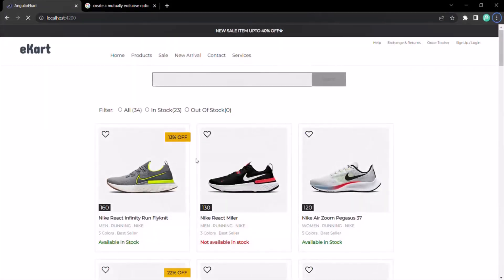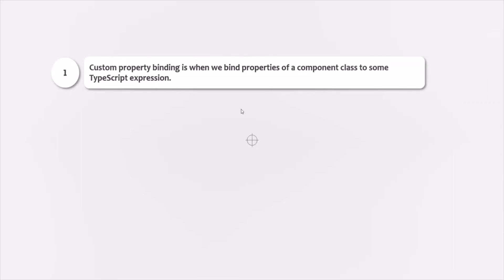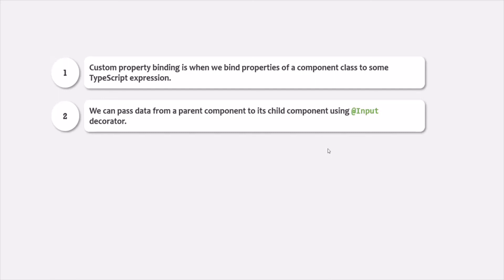Let's go back to the web page. Now you can see the out of stock product count is 11, and if you add the in stock and out of stock values, it gives the total number of products. So, from this lecture and the last lecture, we can say that custom property binding is when we bind properties of a component class to a TypeScript expression, and we can pass data from parent to child component using the @Input decorator. In the next lecture, let's learn how we can pass data from the child component to its parent component using custom event binding. Thank you for listening and have a great day.